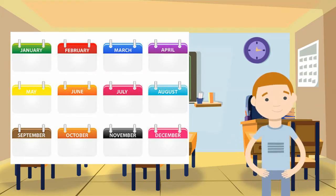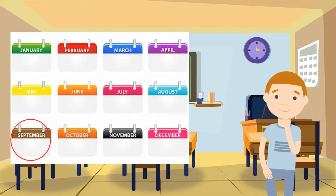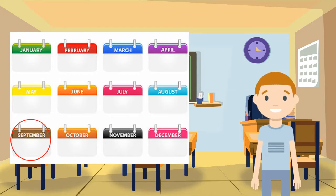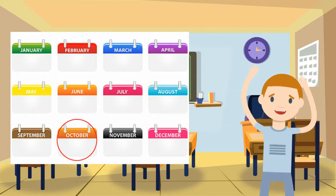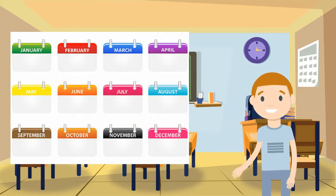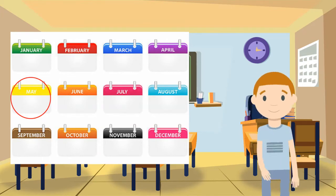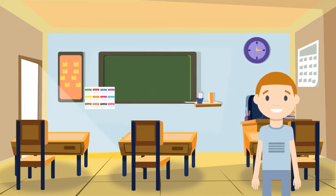We can use a calendar to solve problems. What month comes after September? Correct! October comes after September. October is shown after September. What month comes before May? Yes, April always comes before May.